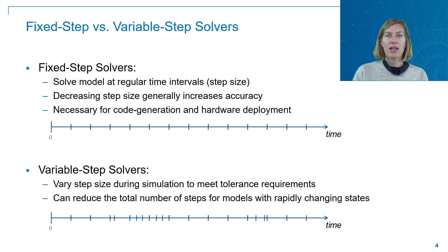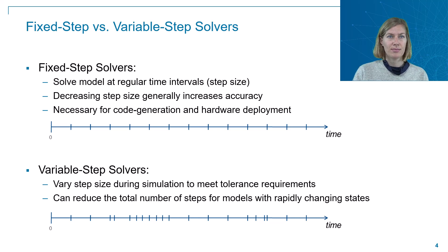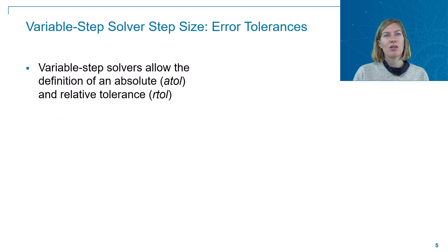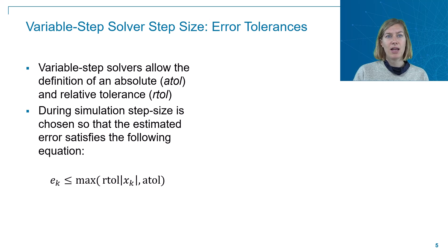Variable step solvers are typically varied to meet tolerance requirements or to capture certain events such as zero crossings. Specifically, if you have a model with rapidly changing states, using a variable step solver can reduce the total number of steps needed to solve the model. A specific option that comes when working with variable step solvers is the definition of an absolute and relative tolerance. During the simulation, the solver will always choose a step size so that the estimated error stays below either the relative or absolute tolerance.